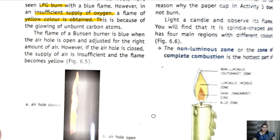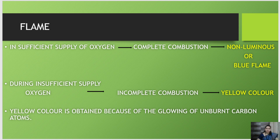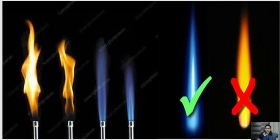You can see the flame of a Bunsen burner in the diagram. In a sufficient supply of oxygen, complete combustion takes place and a non-luminous blue flame is obtained. During insufficient supply of oxygen, incomplete combustion takes place and a yellow color appears due to the glowing of unburnt carbon atoms.